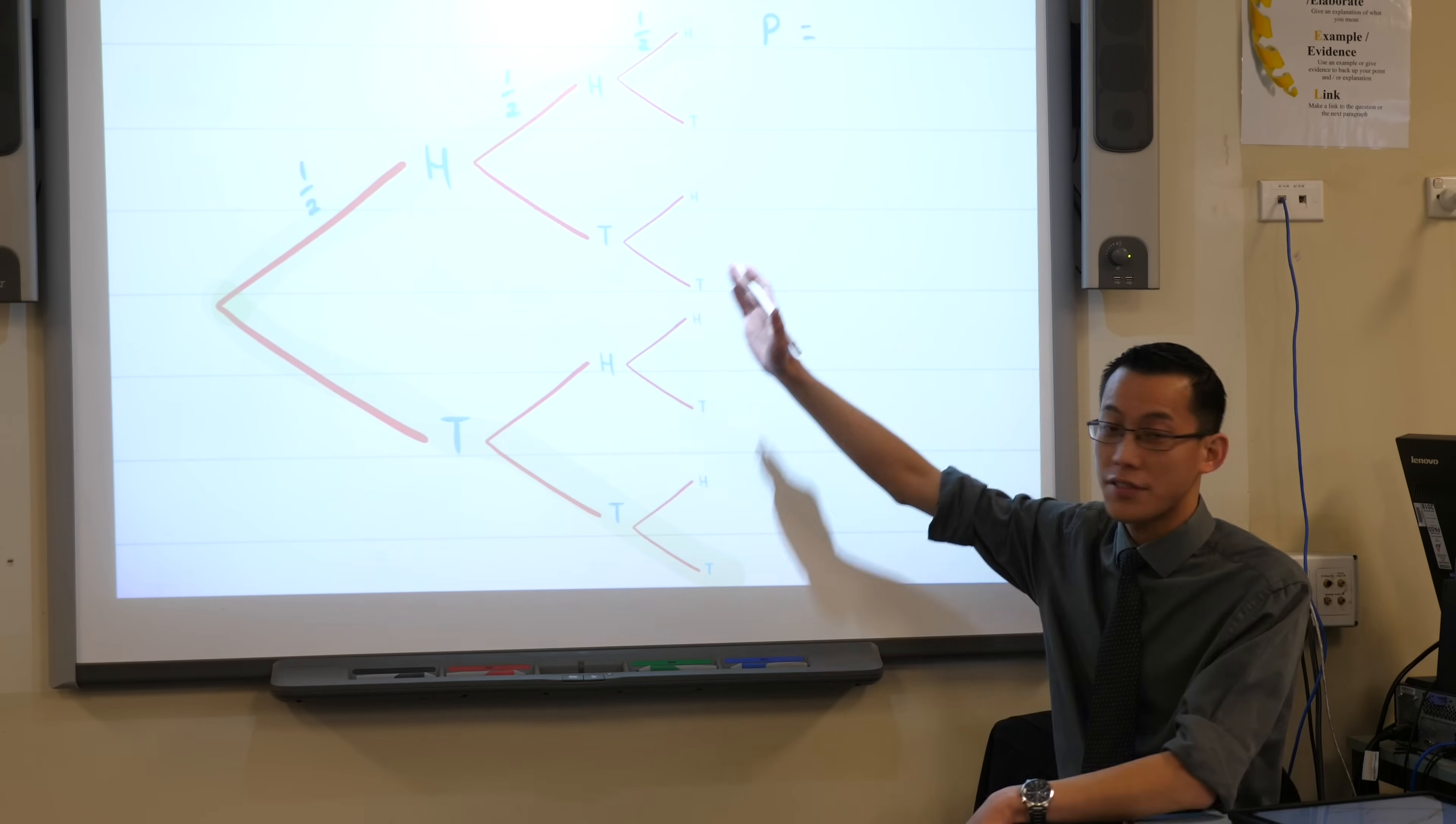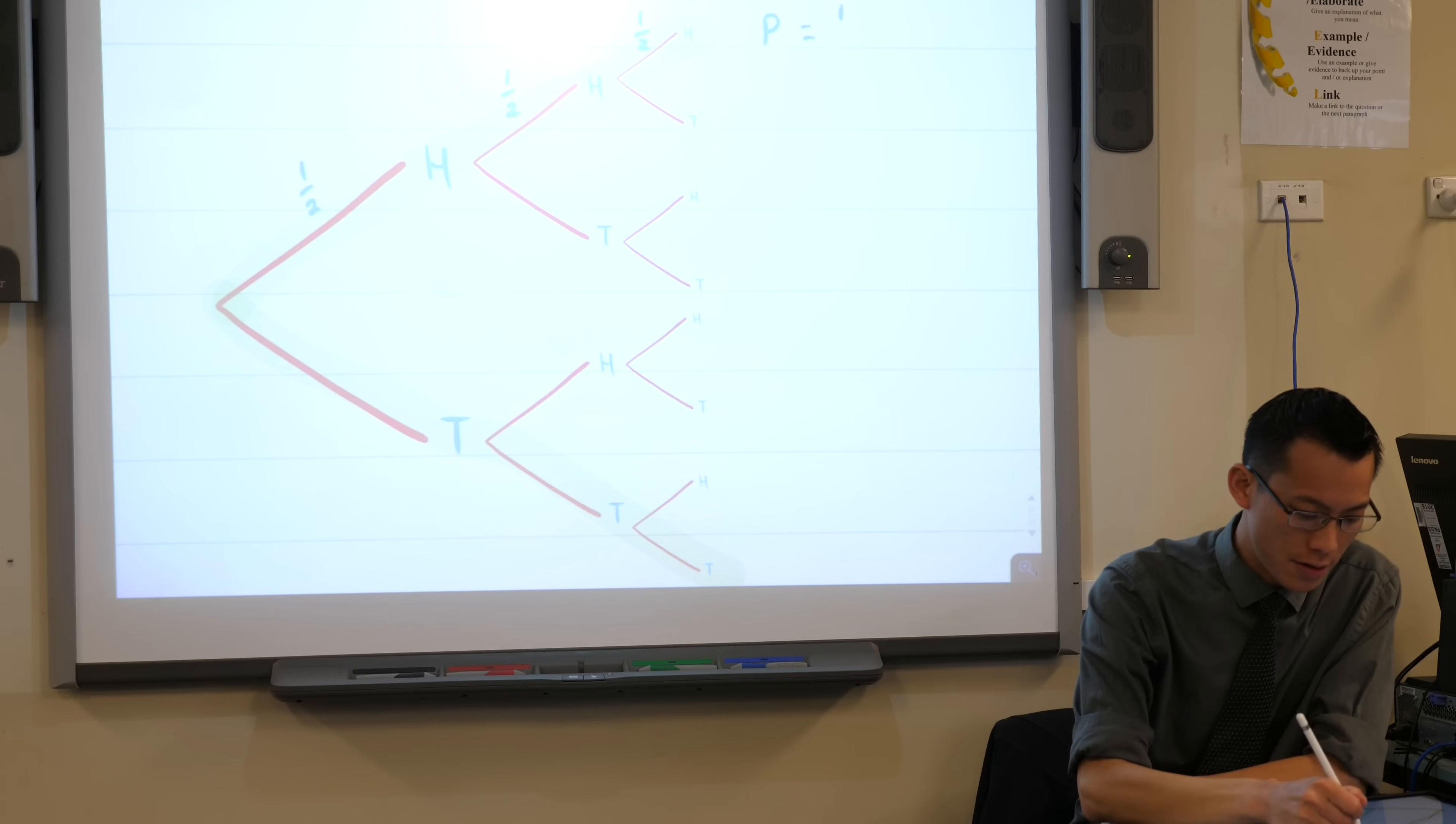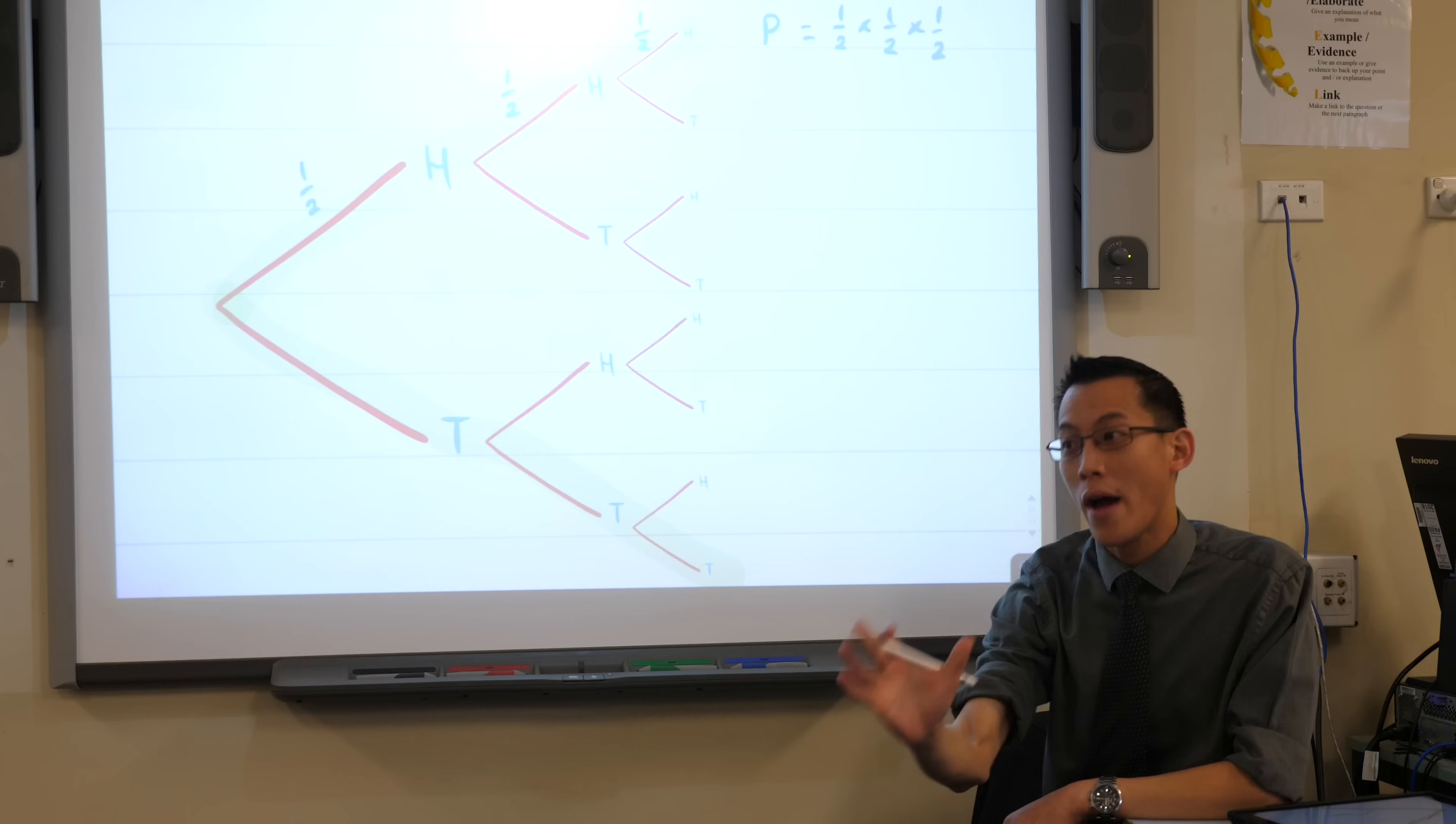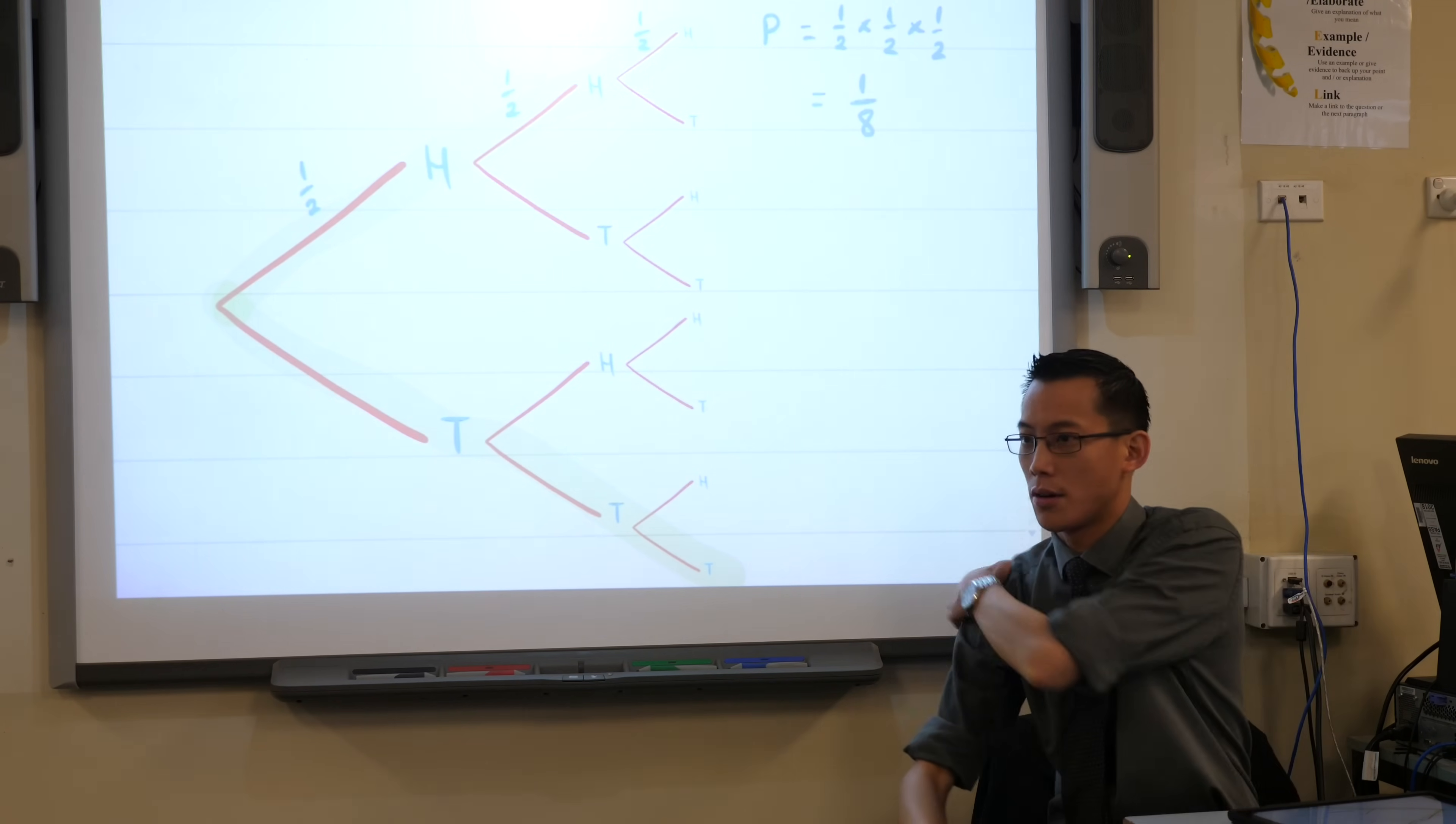Yeah, when I go from left to right across my probability tree, across my tree diagram I should say, I will multiply. So I'm going to, just to make that really obvious, and for all of you I'd like you to do the same, even though of course we know what a half times a half times a half is equal to, I want to write that down just to communicate to you where my answer, which of course is an eighth, where it comes from. Okay?